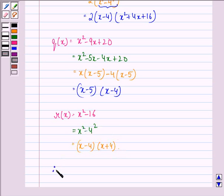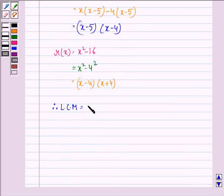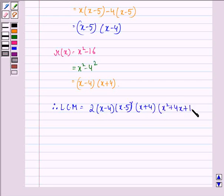Therefore, LCM of the three polynomials P(x), Q(x), and R(x) is equal to 2 times (x minus 4) times (x minus 5) times (x plus 4) times (x squared plus 4x plus 16).